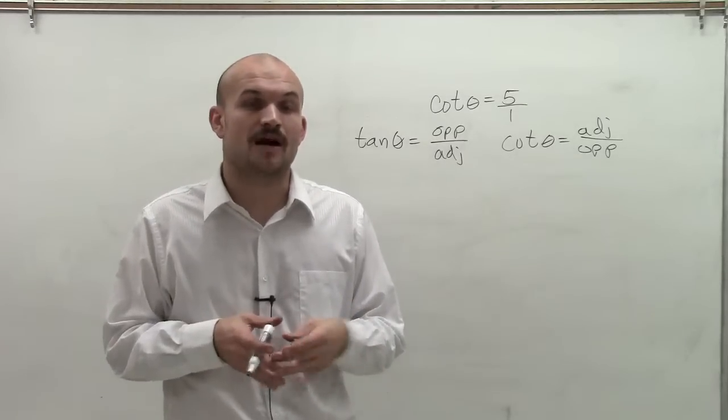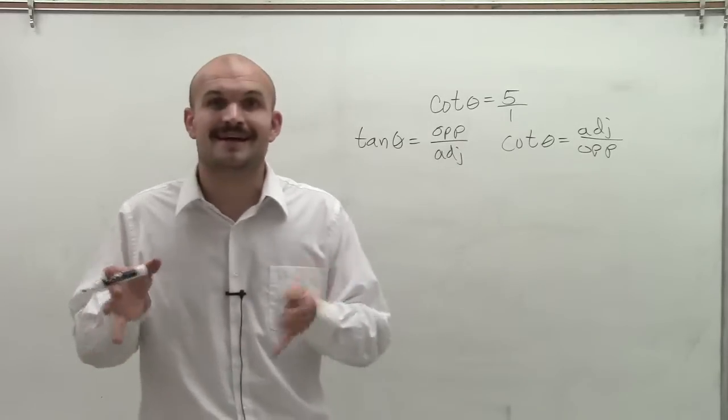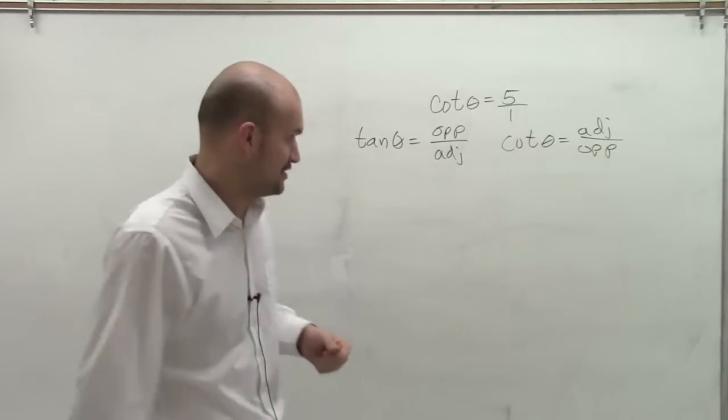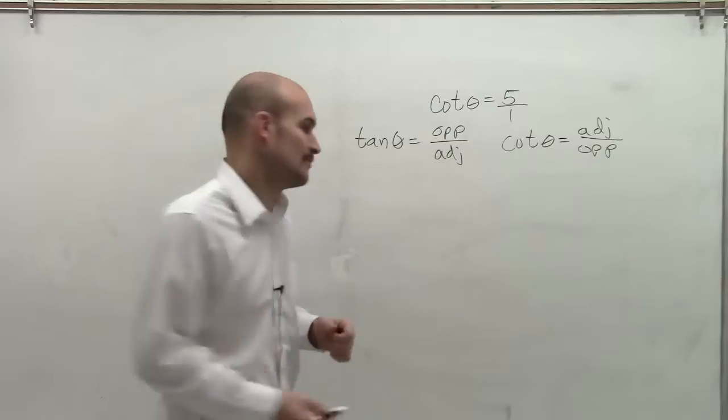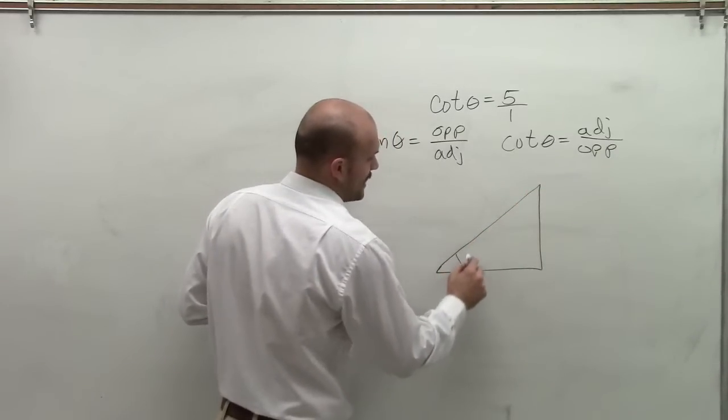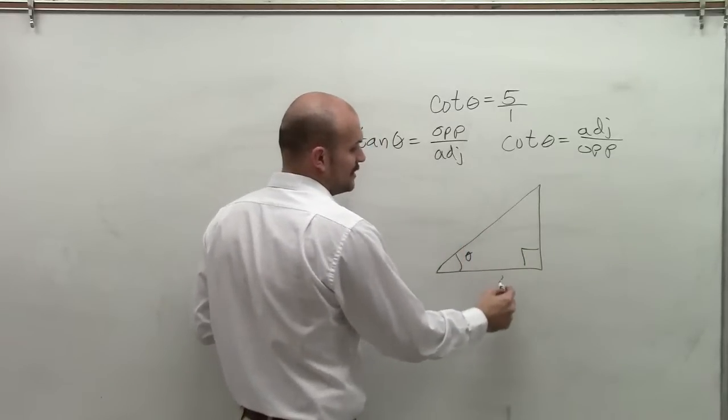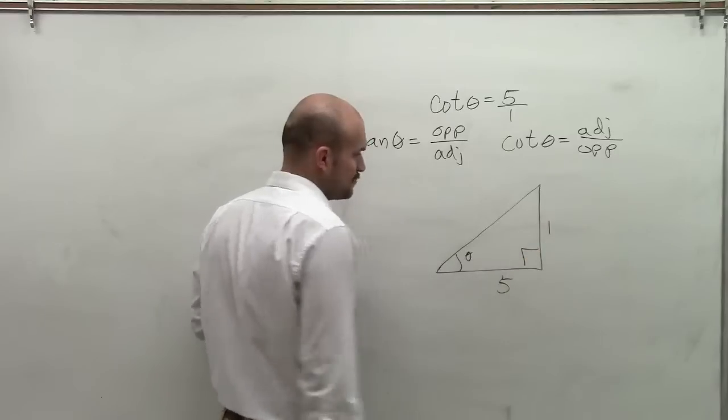So therefore, if I want to be able to figure out the rest of the trigonometric functions, that's actually what we're looking into doing, is evaluating the rest of the trigonometric functions. What I need to do is create a right triangle. So I'm going to create my standard right triangle with my angle theta, here I have a right angle. So therefore, the adjacent side is 5, and the opposite side is 1.